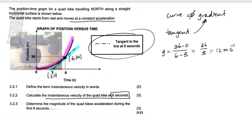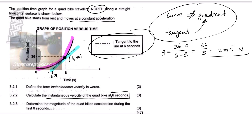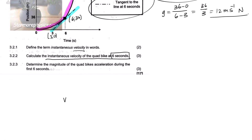Why is the gradient the velocity and not acceleration? Because if you have a velocity-time graph and do the gradient, you get acceleration. But if you have a position-time graph and do the gradient, you get velocity. Going up the graph hierarchy means taking the gradient; going down means finding the area.